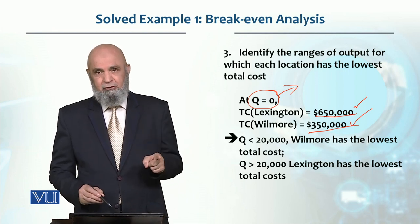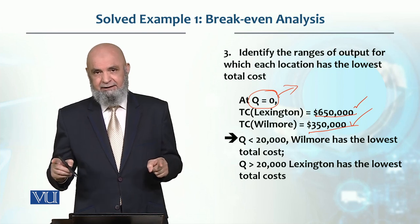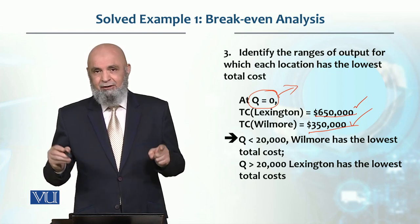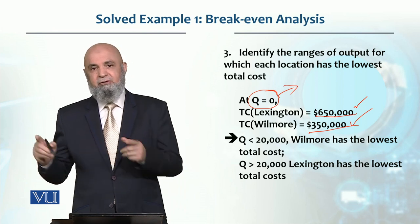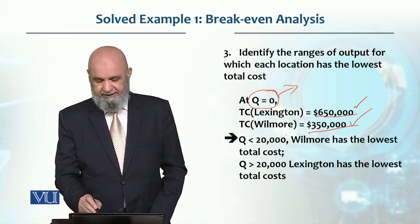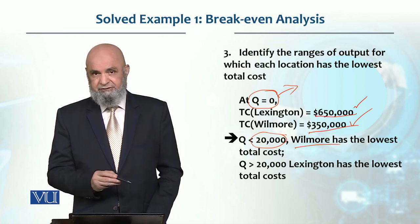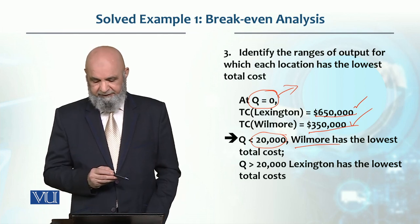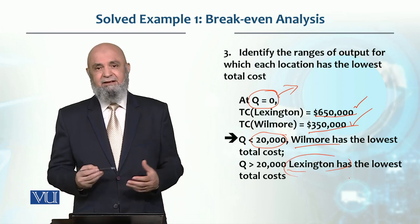That means from zero to 20,000 — which is the break-even between the two locations — one location gives minimum cost, and at 20,000 and above the other location gives minimum cost. So, if quantity is less than 20,000, then Wilmore is preferred because Wilmore has lower cost at zero. So 0 to 20,000 Wilmore is feasible, whereas above 20,000 Lexington is feasible.